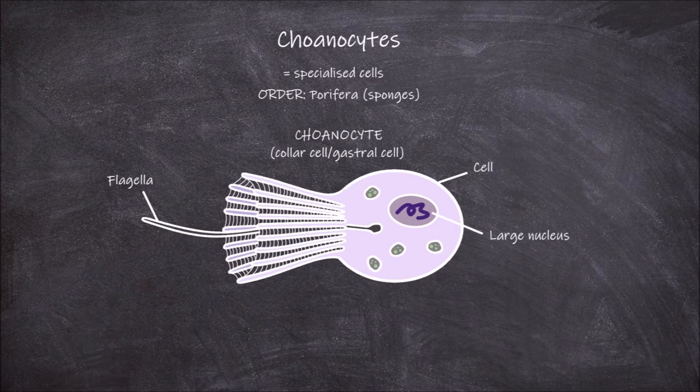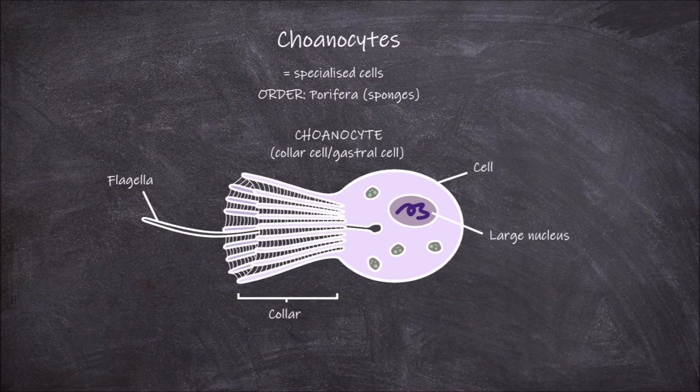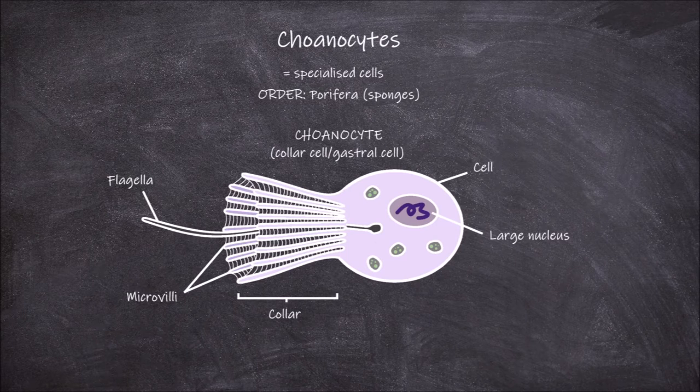This flagella is surrounded by what is called the collar. The collar is made up of around 20 to 55 microvilli that are connected to neighboring microvilli by mucus strands.